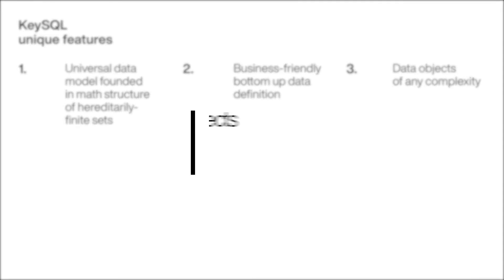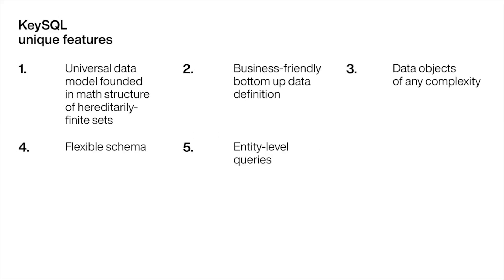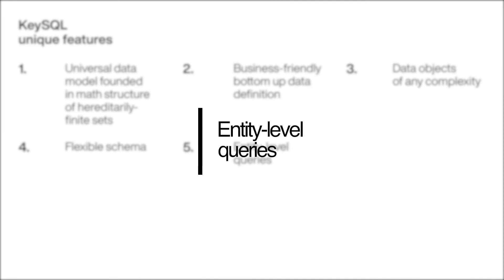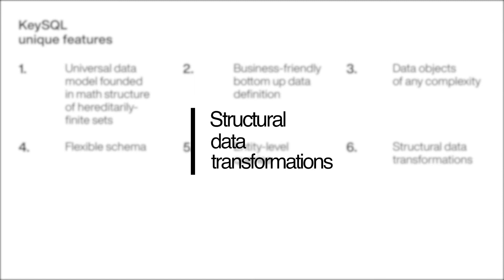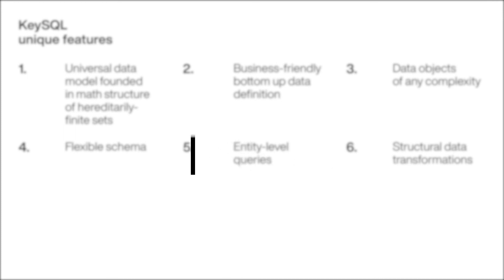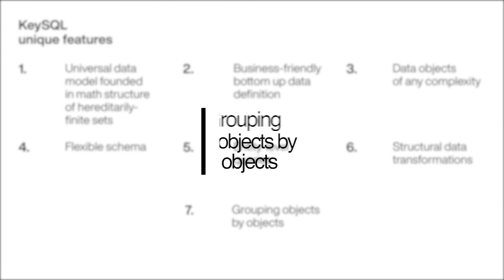The construct of composition allows creating data objects of virtually unlimited complexity. The flexible schema approach allows data with different structures to be accessed with a single query. Complex business objects, which would correspond to one or more SQL tables, are treated on equal basis with elementary objects and can be retrieved, updated, or deleted simply by using their names in the corresponding KeySQL statements. KeySQL also provides powerful means for producing new data structures from existing ones, with structural data transformations that facilitate precise targeting and shaping of data. In particular, KeySQL supports grouping of objects of any complexity by other objects.